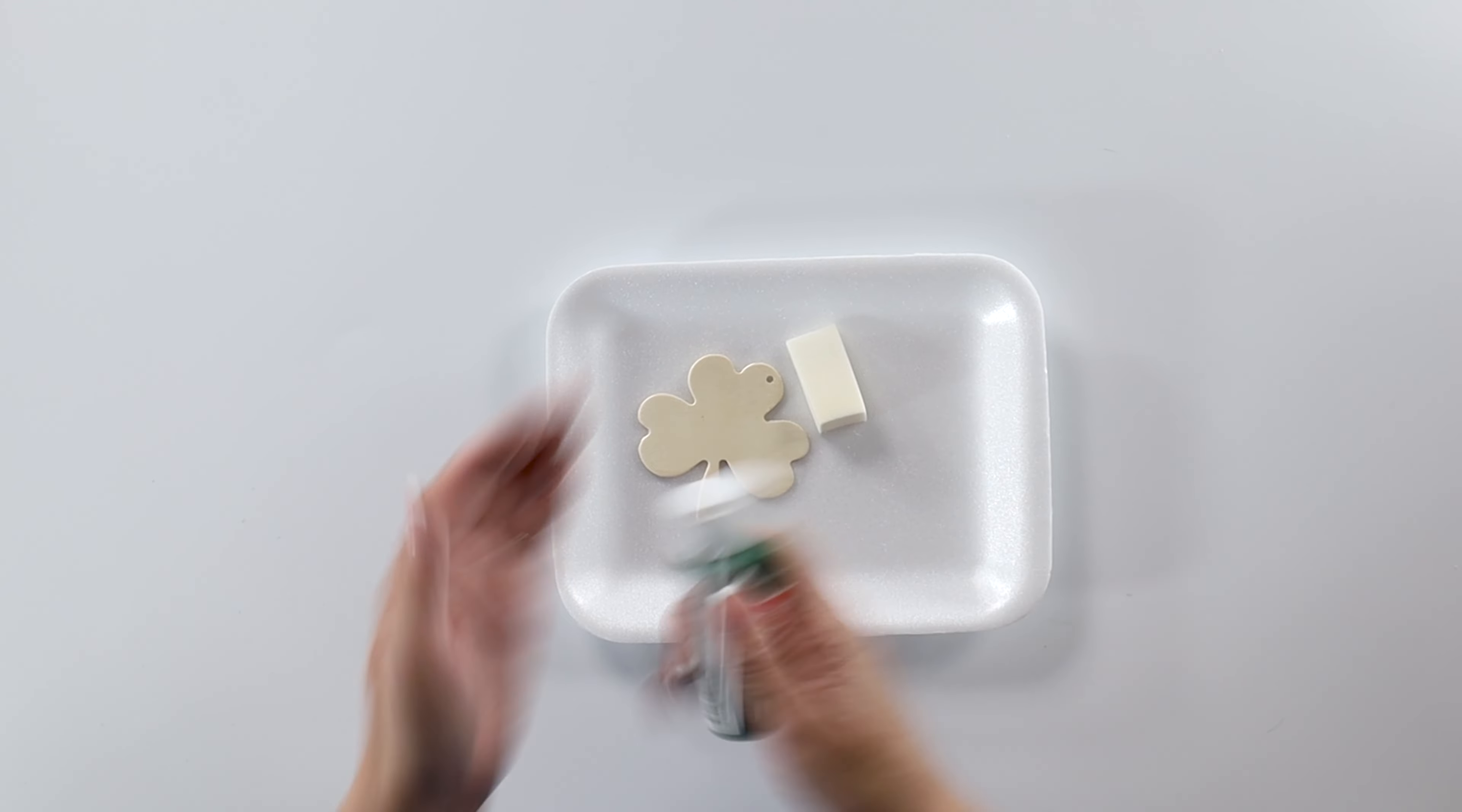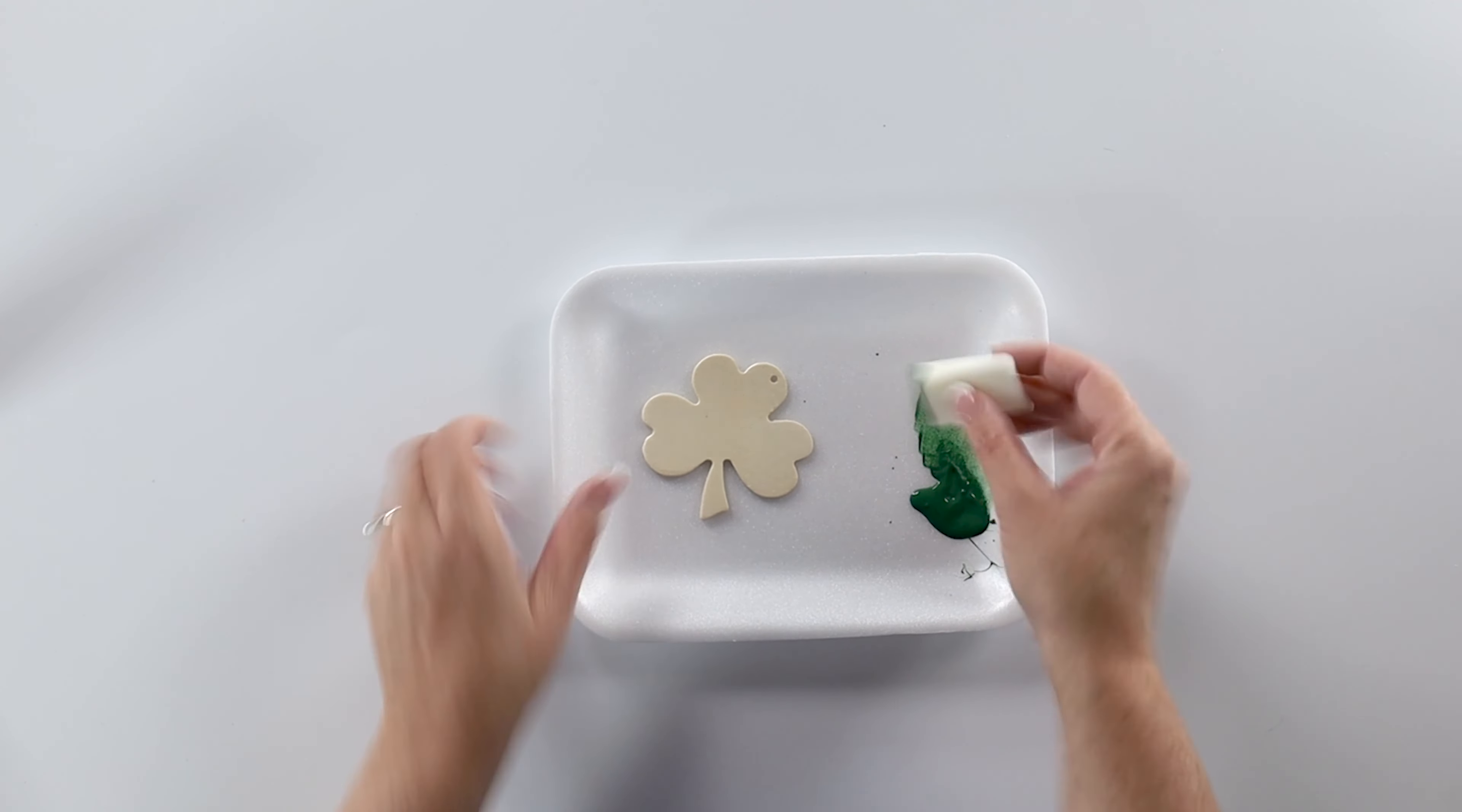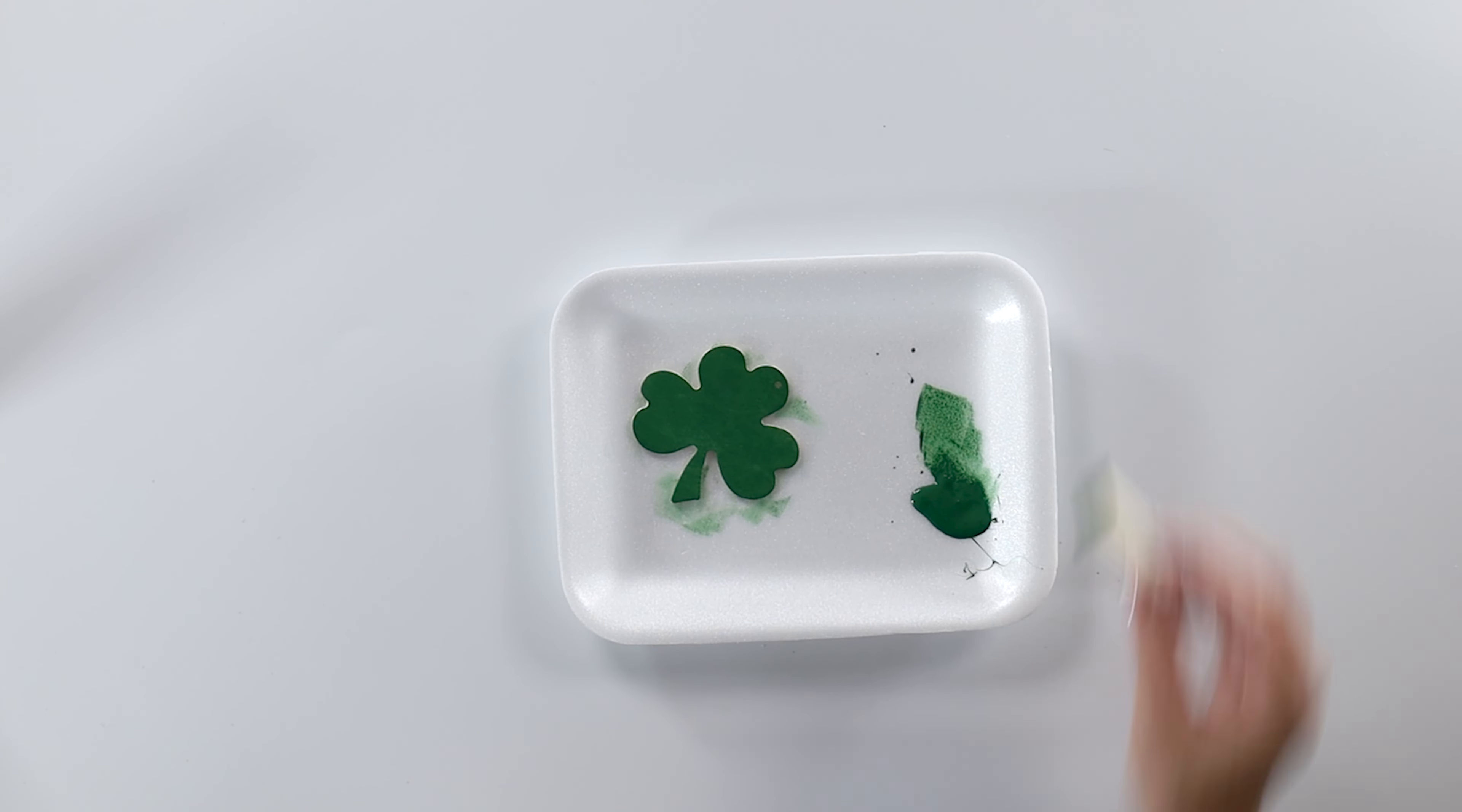And then I'm just going to paint it. Shake up my paint. Put a little bit on my little plate here. And that makeup sponge, if you wondered what I was going to do with that makeup sponge, that is how I'm going to paint my little shamrock. And just dab that paint on. And this will probably take two coats.